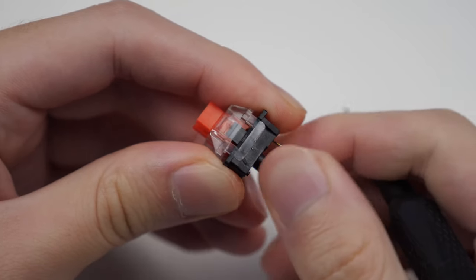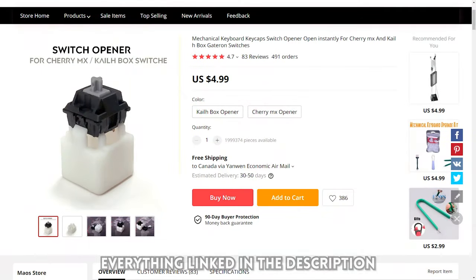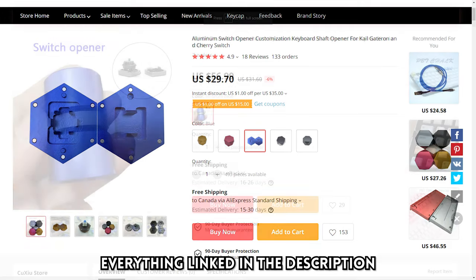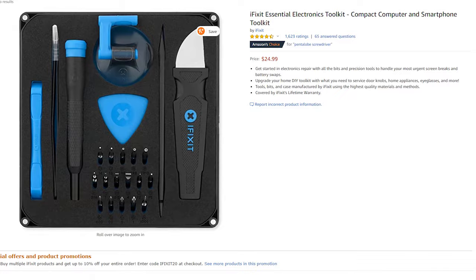And after the switch is open, the inside structure is the same as cherry switches. You also have the option to get these efficient switch opener tools, but if you're not building keyboards or lubing switches from time to time, it might be more worth it to invest in a small tool kit from iFixit instead.